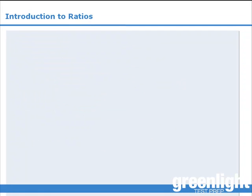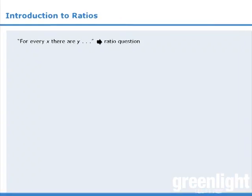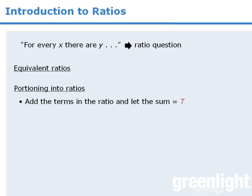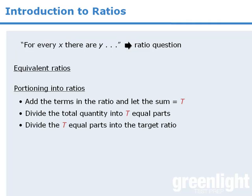In this lesson we learned that if a question can be written in the format 'for every x there are y' then it is a ratio question. We learned how to solve equivalent ratio questions and how to solve portioning questions. To solve portioning questions, add the terms in the ratio to get a sum t, divide the total quantity into t equal parts, and then divide those parts into the target ratio.